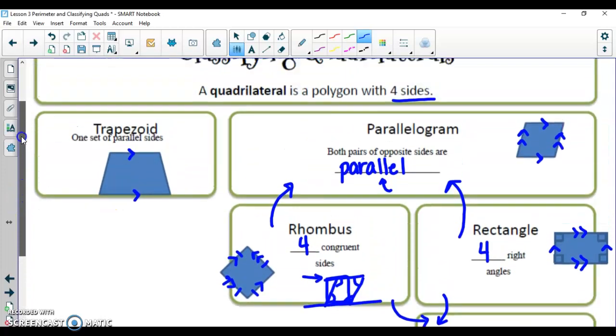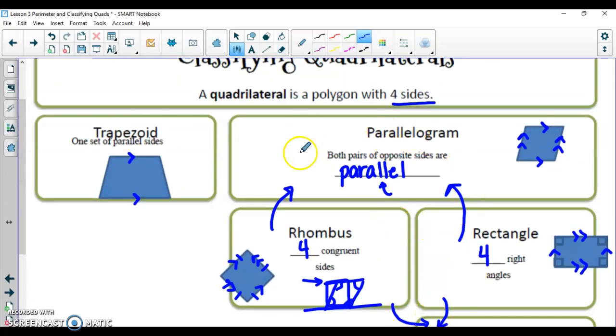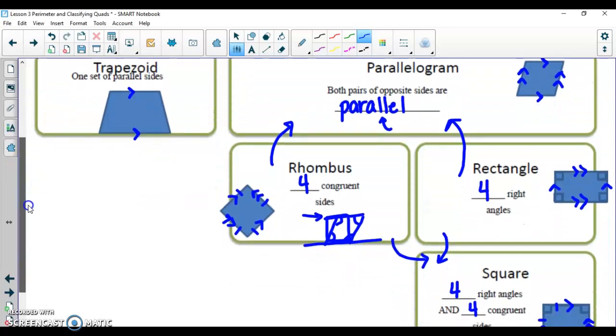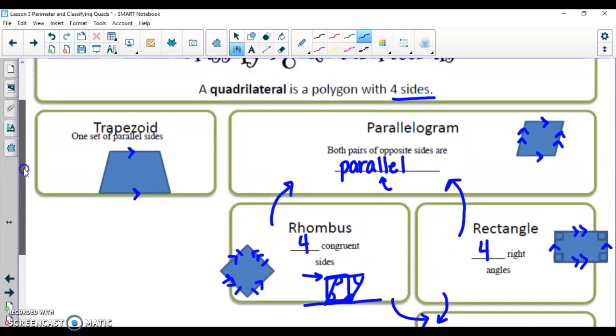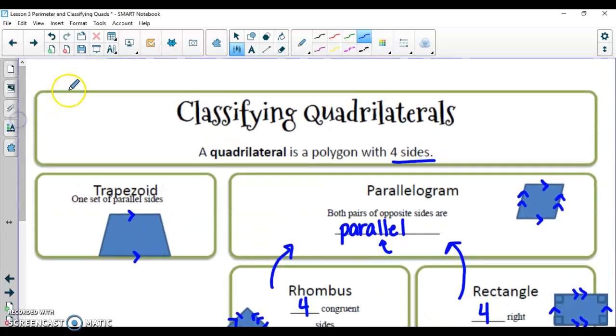So again, anything lower on the chart, all of the names above it actually apply as well, but it doesn't work the same way going down. Not all quadrilaterals are trapezoids. Not all quadrilaterals are parallelograms, and so on and so forth. That wraps up the end of today's lesson for talking about classifying quadrilaterals as well as talking about perimeter.